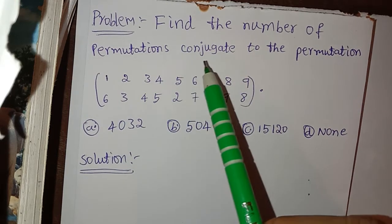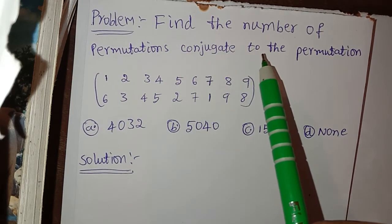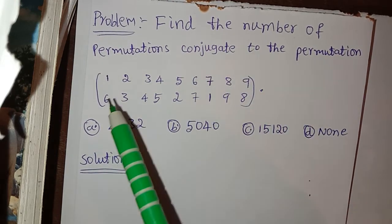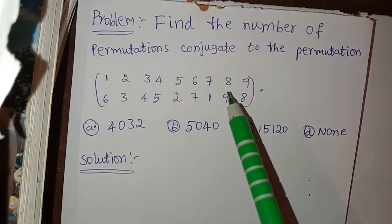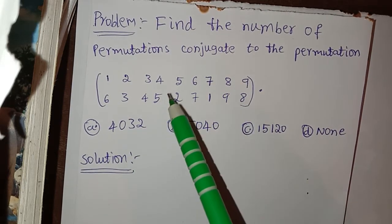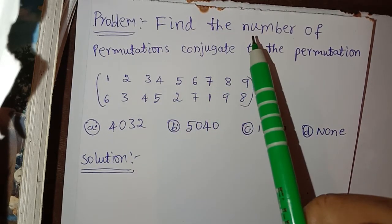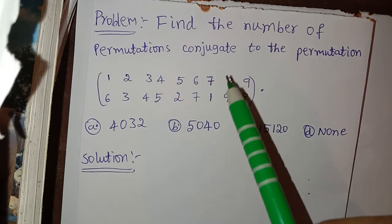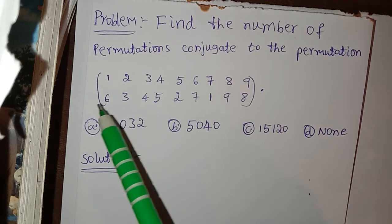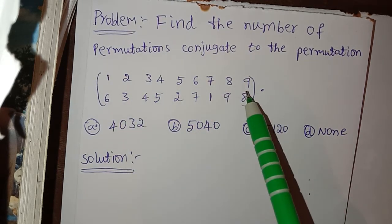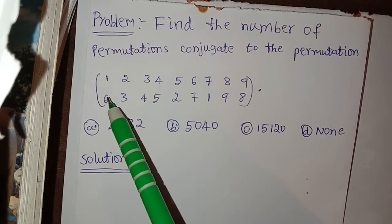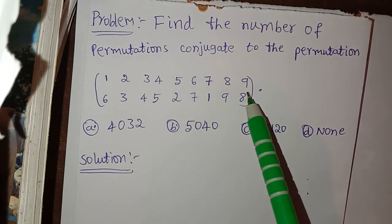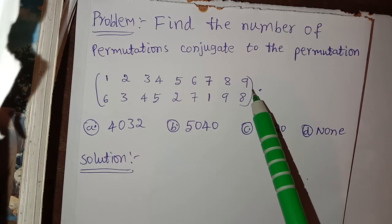Find the number of permutations conjugate to the given permutation. We have to find out how many permutations are conjugate to this permutation. First, we have to write this permutation as the product of disjoint cycles.